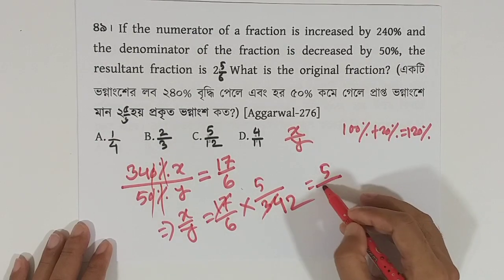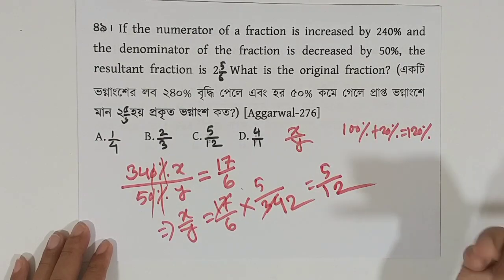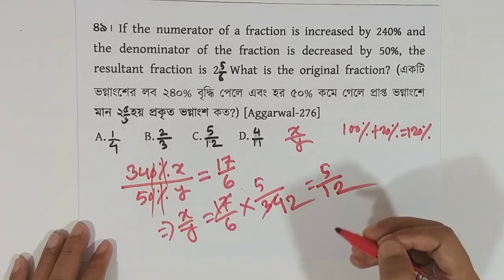And the numerator of the fraction is 6, 6 divided by 12. So, the numerator of the fraction is 5 divided by 12.